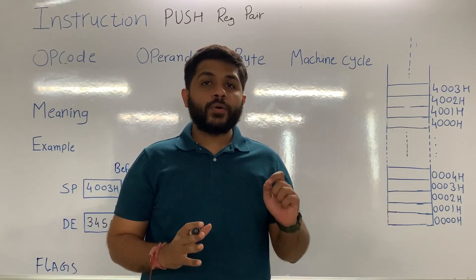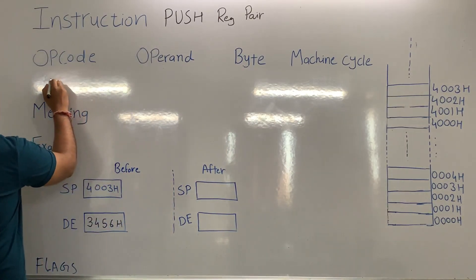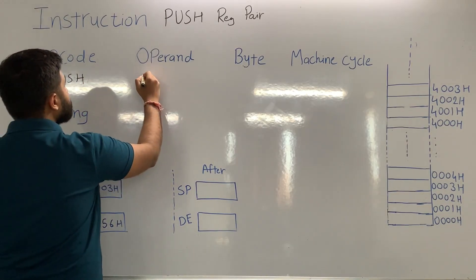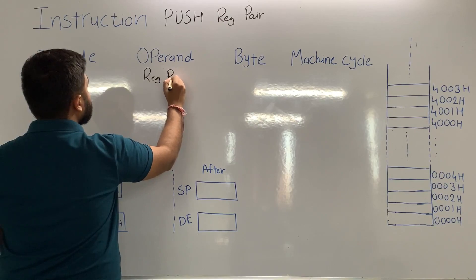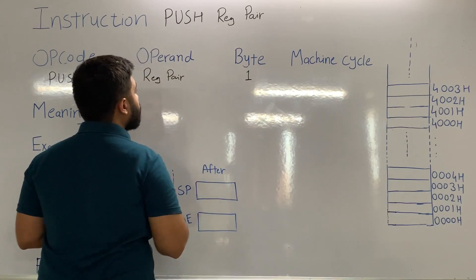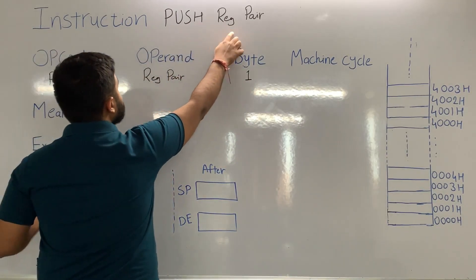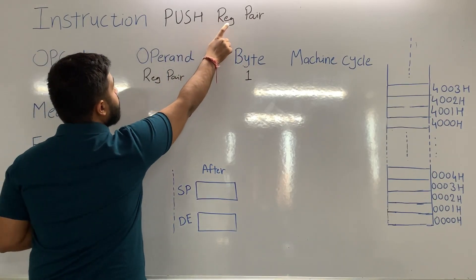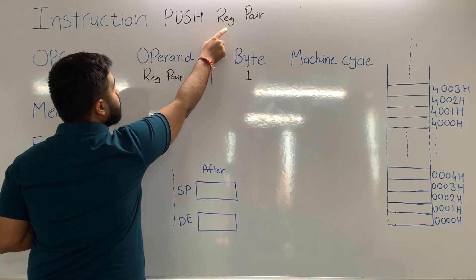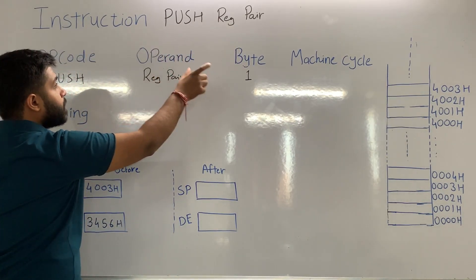We are going to see the instruction PUSH register pair. In this instruction, the opcode is PUSH and the remaining portion is the operand, which is the register pair. No data is present in the instruction, which means this instruction is of only one byte. The meaning of the instruction is: push the content of the register pair to the stack.